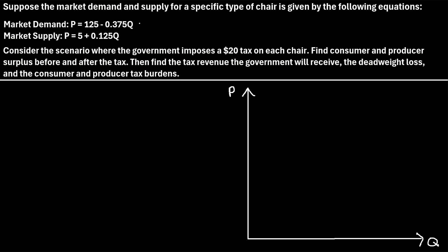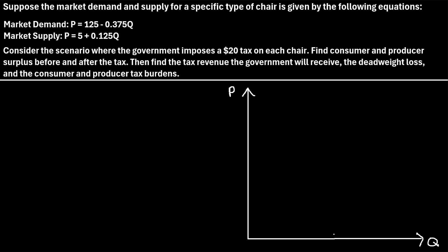Before we start solving this problem, it will help if we actually graph the market demand function and the market supply function, because that will help us visualize the situation. So let's start with the market demand function. The easiest way to graph this line is to start by plugging in a 0 for Q. I've created a graph where the y-axis is the price and the x-axis is the quantity. If we plug in a 0 for the quantity, we're right here on this axis.